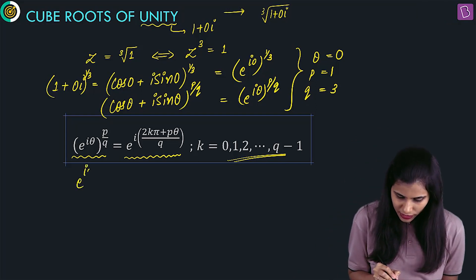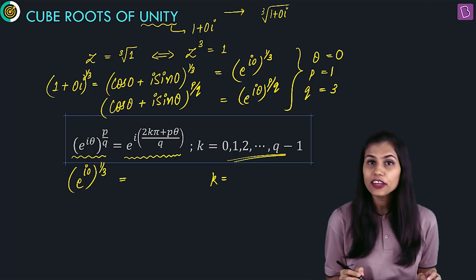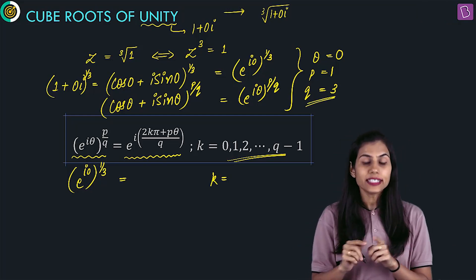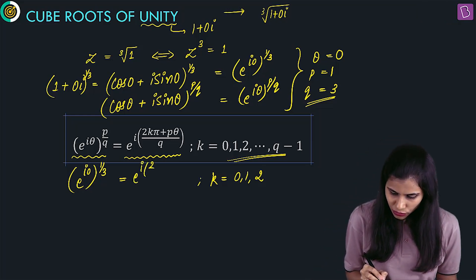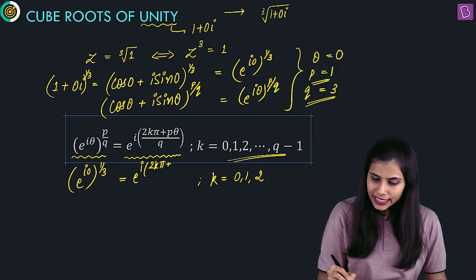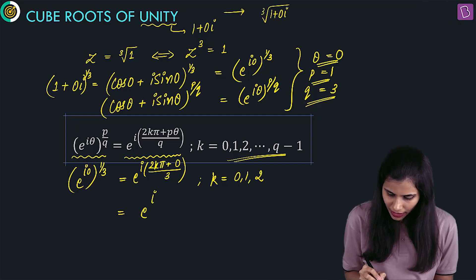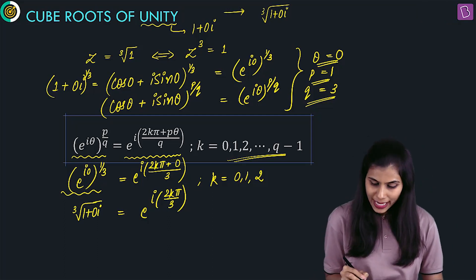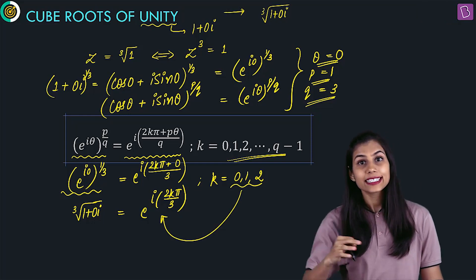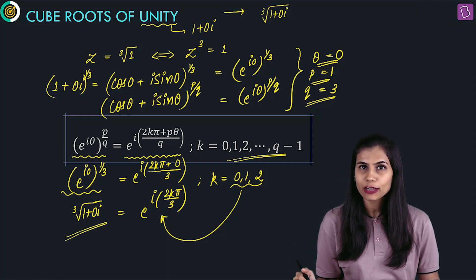I know that e to the power iota theta to the power p by q has q distinct answers given by e to the power iota into 2k pi plus p theta by q, where k takes values 0, 1 up to q minus 1. So e to the power iota 0 raised to the power 1 by 3 will have 3 distinct answers corresponding to k varying from 0 to q minus 1. Since q is 3, k takes values 0, 1, and 2. Simplifying, each answer is e to the power iota into 2k pi by 3, and my left-hand side is nothing but the cube root of unity.